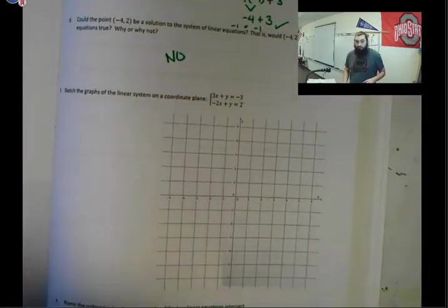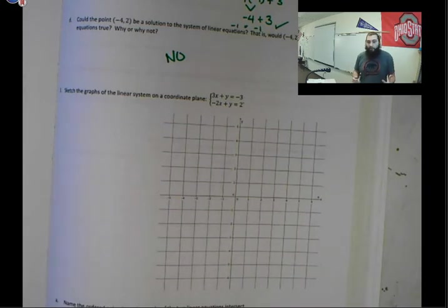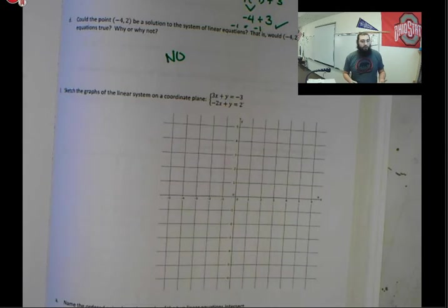So this is essentially the process. We take our equations that are given to us either in standard form or slope intercept form. Me personally, I always put equations back into slope intercept form and then I graph my equations. So I'm going to do the same thing for question number 3. Same deal.